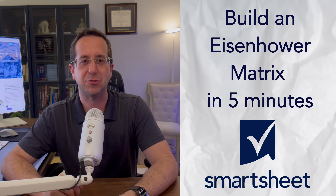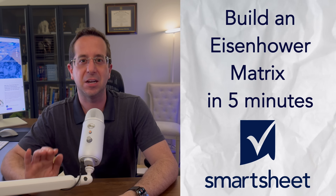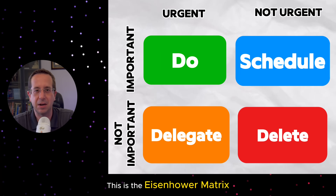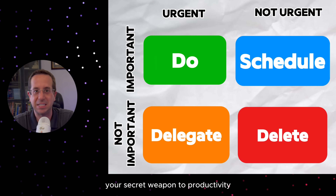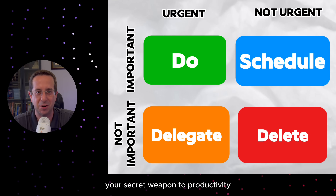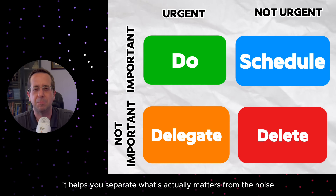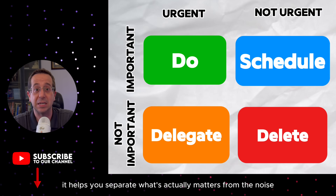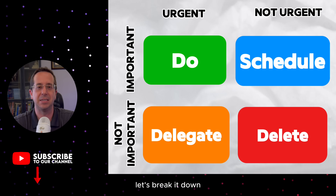In the next 10 minutes, you're going to learn how to create an Eisenhower Matrix, which is the proven system that top CEOs and military leaders use to instantly cut through the chaos and know what to work on. This is the Eisenhower Matrix — your secret weapon to productivity. It helps you separate what actually matters from the noise. Let's break it down.